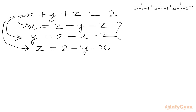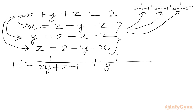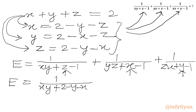So we have x, y, z which we are going to plug in here. The required expression E will be equal to 1 over xy plus z minus 1, plus 1 over yz plus x minus 1, plus 1 over zx plus y minus 1. Now we put the z value, x value, and y value in respectively. So we get E equal to 1 over xy plus, for z we write 2 minus y minus x, minus 1.